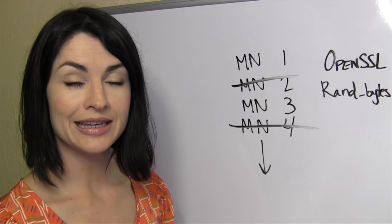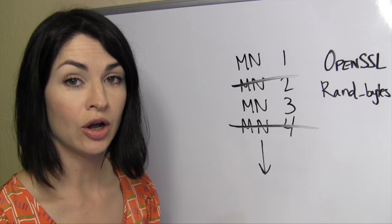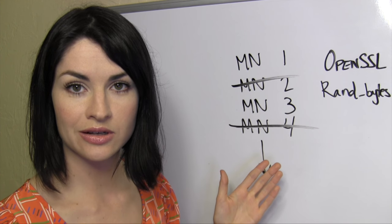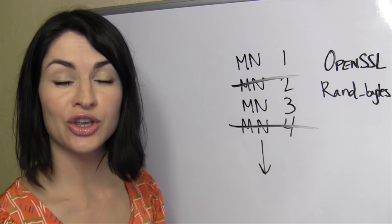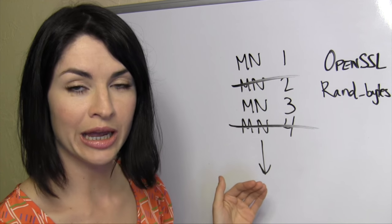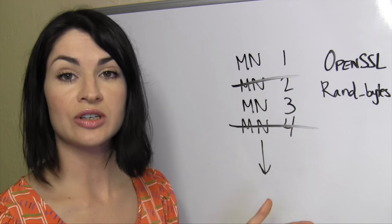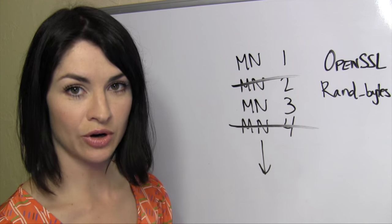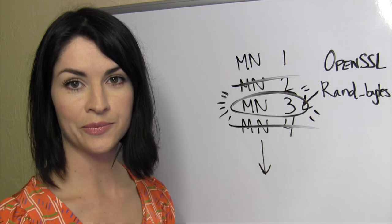Your wallet contains a randomness generator called OpenSSL Randbytes. It uses that utility to pick from among the remaining masternodes to select one randomly, which you will then submit a mixing request to.